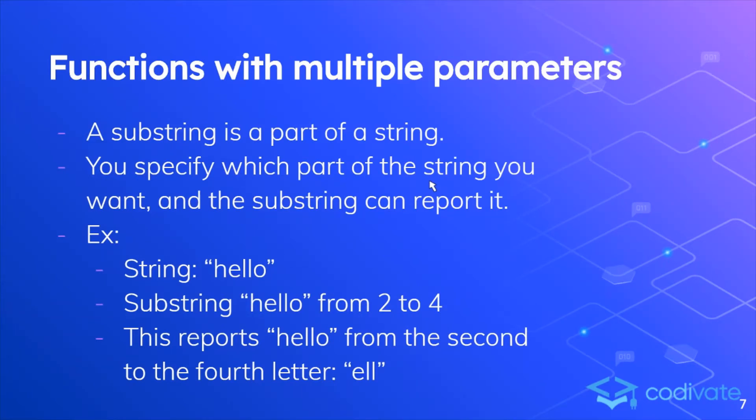A useful example of a function with multiple parameters is a substring. A substring is part of a string. A substring takes three values: the string, the starting letter position, and the ending letter position. And it can report the part of the string that fits the parameters.